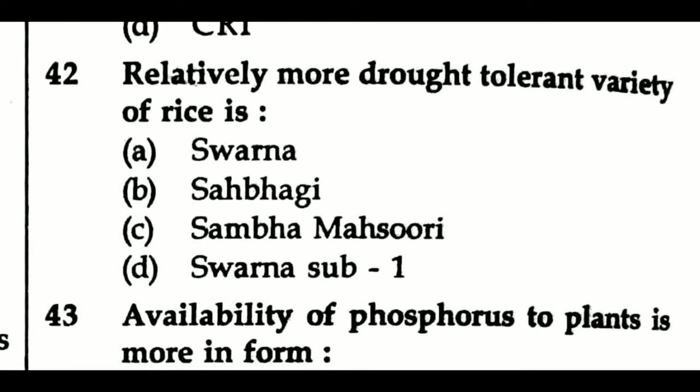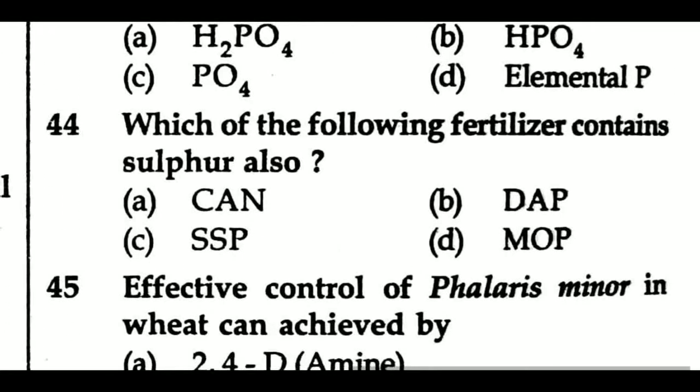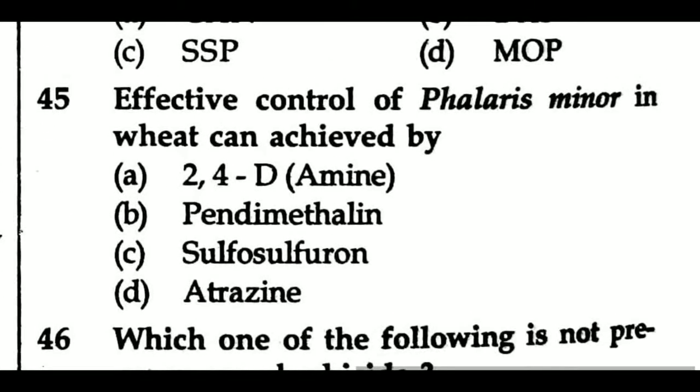Question 42: Relatively more drought tolerant variety of rice is — Option A: Swarna, Option B: Sahabhagi, Option C: Sambha Masuri. Question 43: Availability of phosphorus to plants is more in form — Option A: H2PO4⁻, Option B: HPO4²⁻, Option C: PO4³⁻, Option D: elemental phosphorus. Question 44: Which of the following fertilizer contains sulfur also? Option A: CAN, Option B: DAP, Option C: SSP, Option D: MOP.